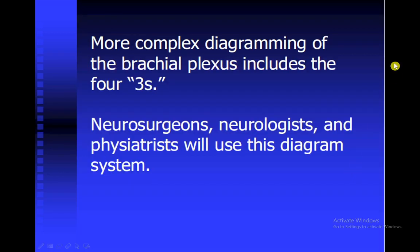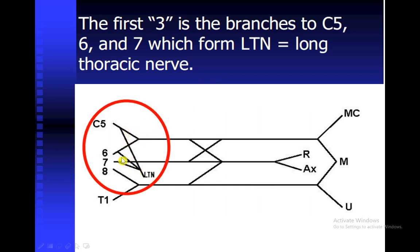Now going on to the more complex part, we need to include three collateral branches on each arrow. Neurosurgeons, neurologists, psychiatrists, and anatomists all use this system diagram. The first three: joining C5, C6, and C7 together gives us a nerve we call the long thoracic nerve. The long thoracic nerve innervates the serratus anterior muscle, and damage to this nerve leads to the clinical condition we call winging of the scapula.